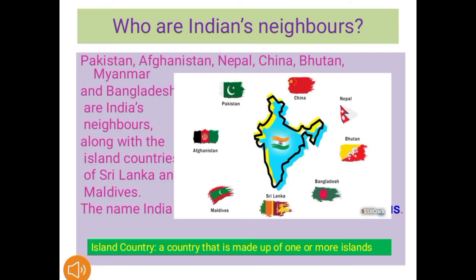Next, we know who India's neighbors are. Pakistan, Afghanistan, Nepal, China, Bhutan, Myanmar, and Bangladesh are India's neighbors, along with the island countries of Sri Lanka and Maldives. The name India has been derived from the river Indus. You all remember the names of India's neighboring countries.